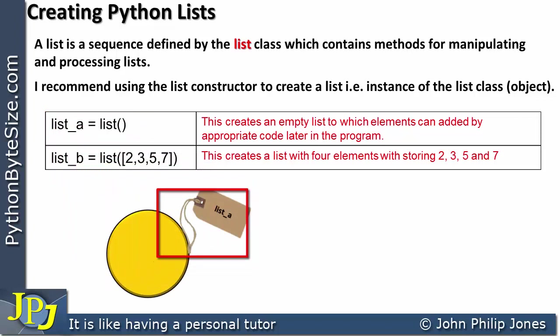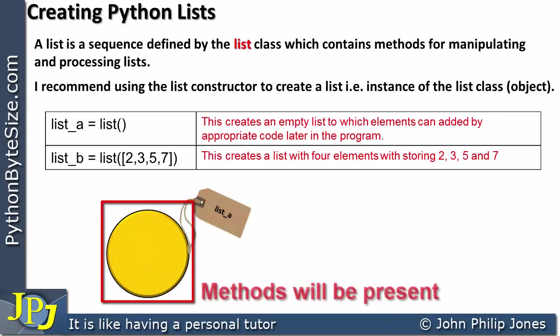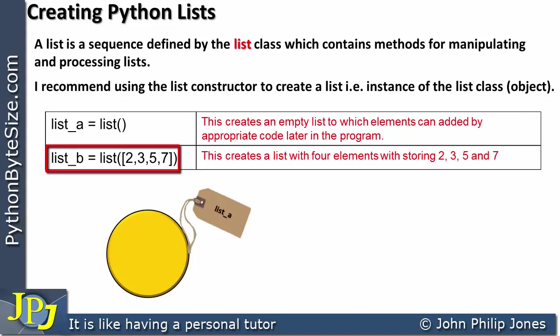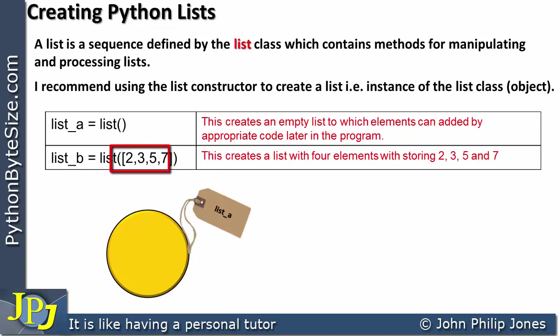You can see that we label it with the name list_a and show an object. If you look inside the object, you can see there is nothing there, suggesting that it is empty. For the second example, we've chosen a different name, list_b, which is assigned. Here I'm using a constructor for the list class, and inside the brackets you can see 2, 3, 5, 7. This is going to create a list with 4 elements storing 2, 3, 5, and 7.